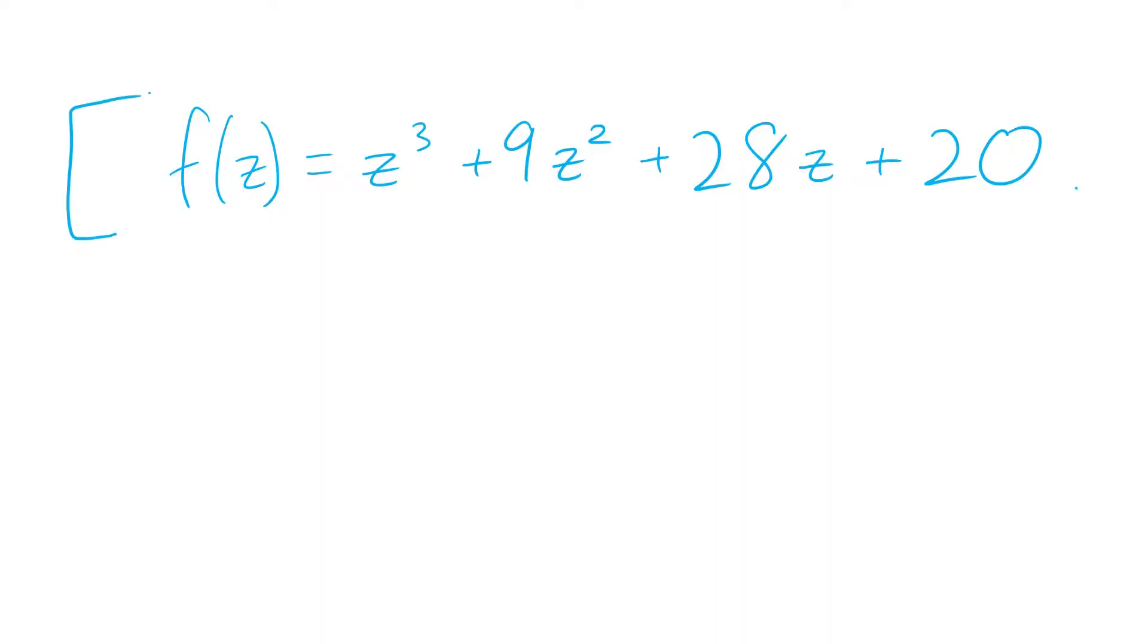is to trial some numbers for Z and see when the polynomial is equal to 0. So for example, if we try and substitute in Z equals 1, substituting in that does not equal 0.